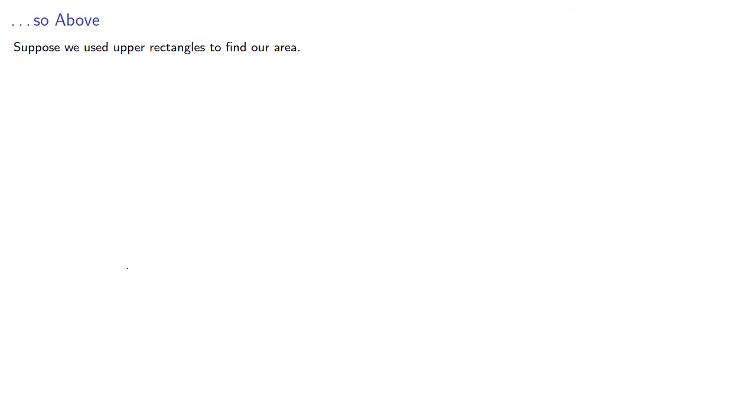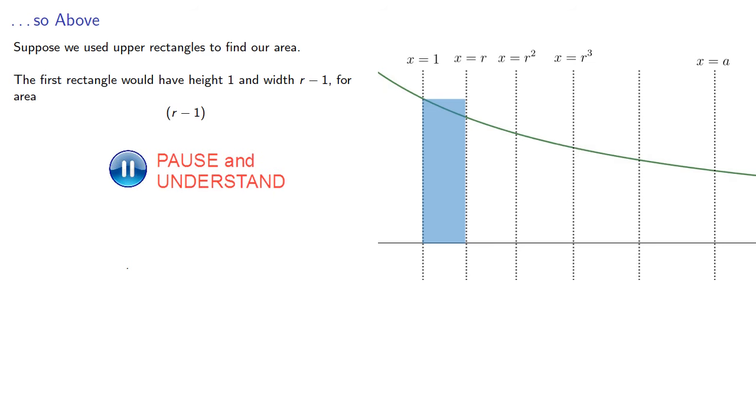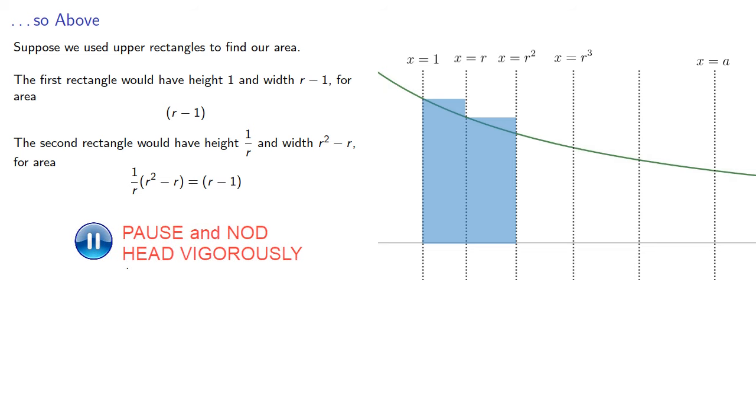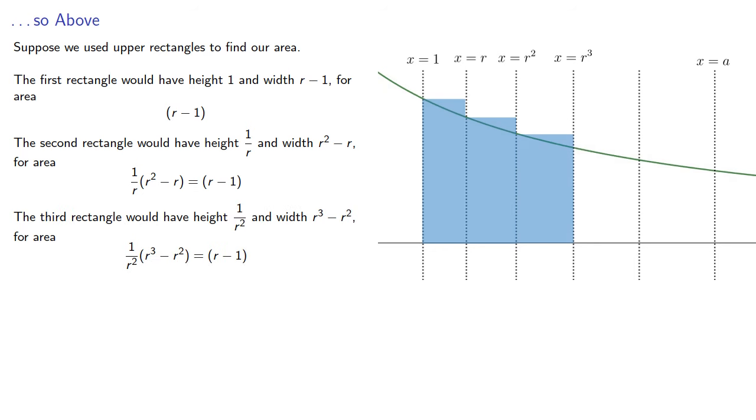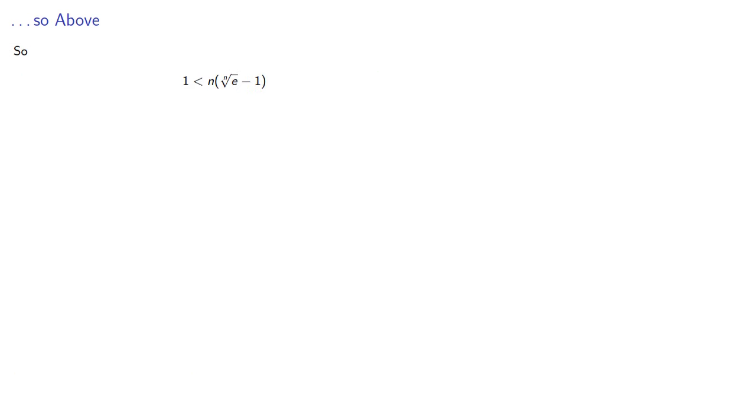As for a lower bound, suppose we use the upper rectangles to find our area. Then the first rectangle would have height 1 and width r minus 1 for area r minus 1. The second rectangle would have height 1 over r and width r squared minus r for area r minus 1 over r. The third rectangle would have height 1 over r squared and width r cubed minus r squared for area r minus 1 over r, and so on. So the upper sum would be 1 plus n minus 1 times r minus 1 over r, and this would always be greater than 1. So again doing a little bit of algebra, we can find a lower bound for e.